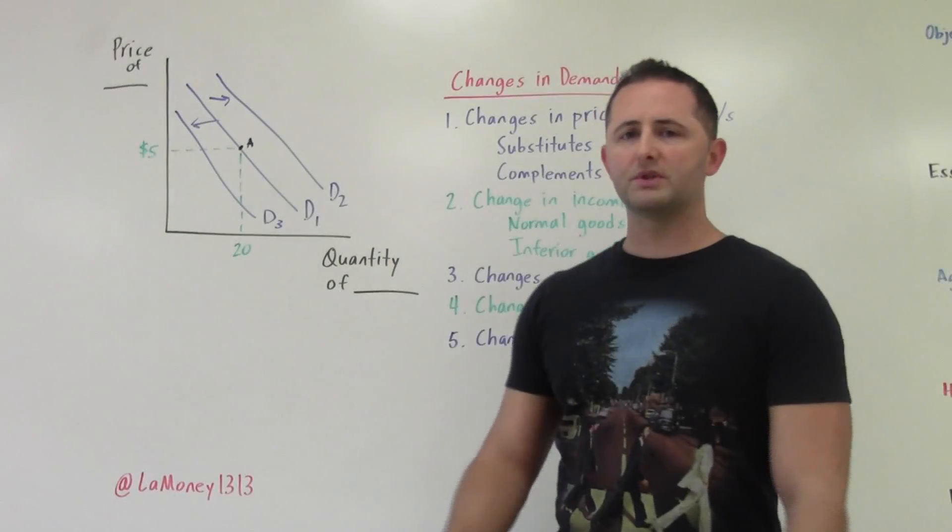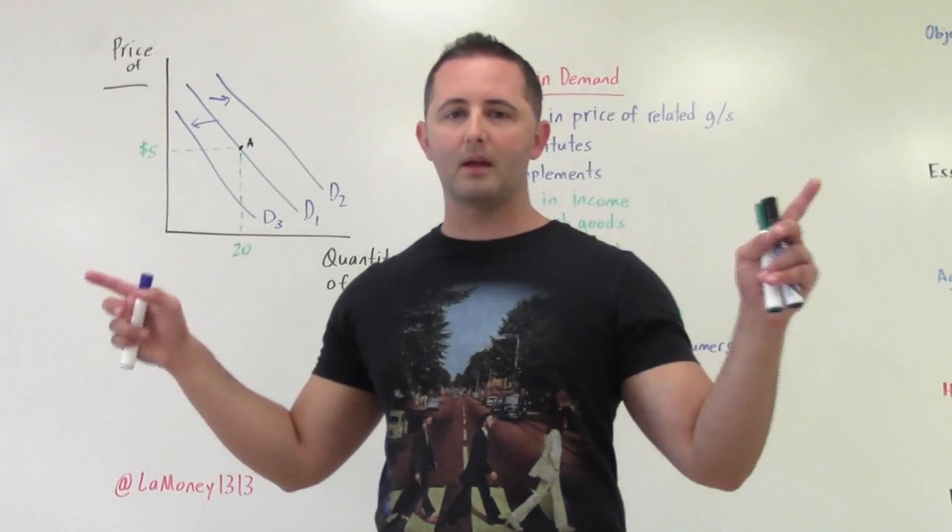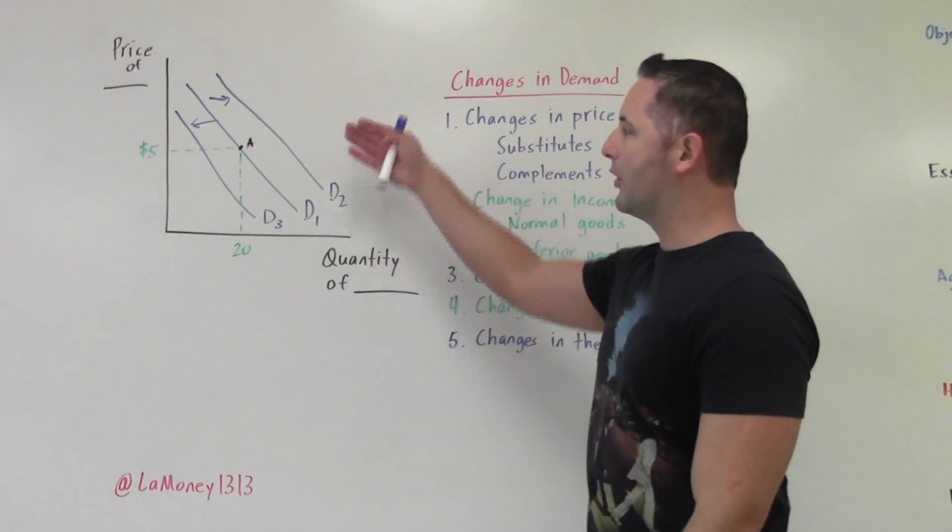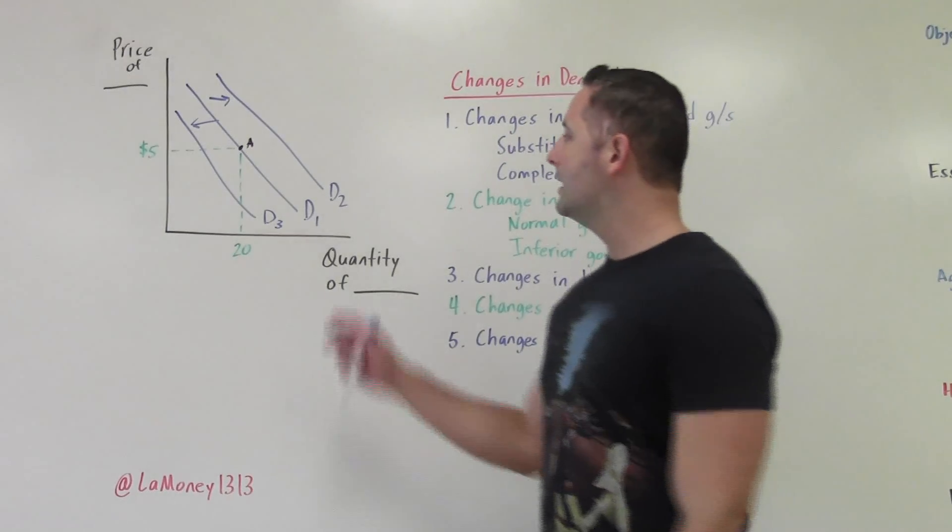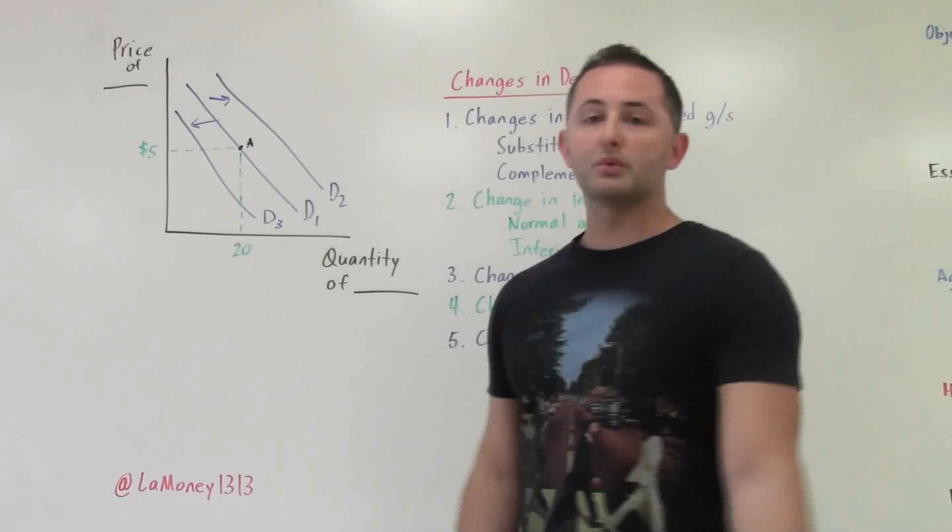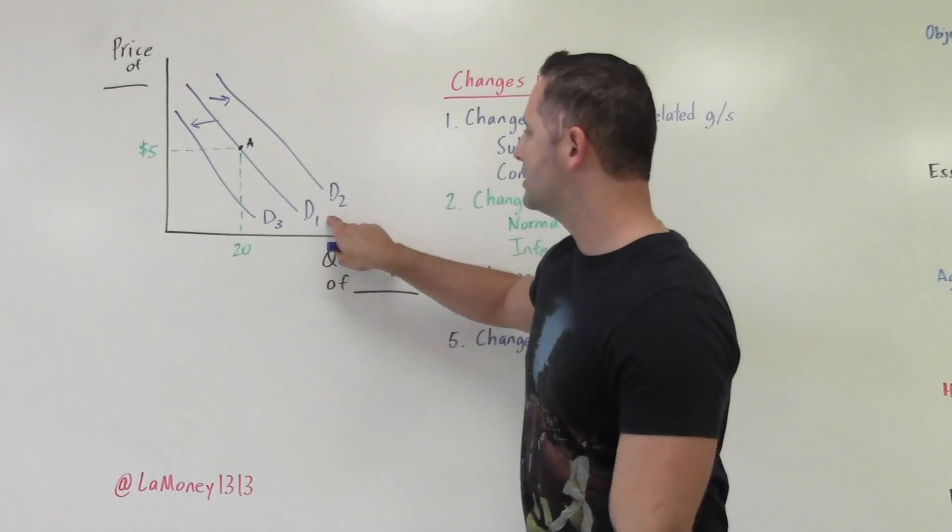It doesn't matter which one is two and which one is three in this case because you wouldn't shift them both in different directions. I'm just doing them both in the same model for simplicity. But you start with the lower numbers where you start. So D1, that means that's our original demand curve.